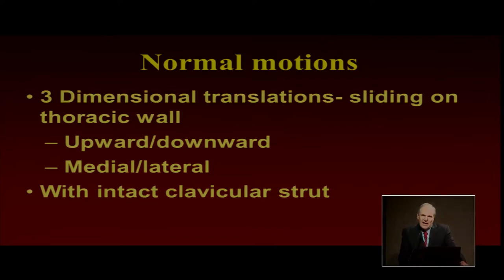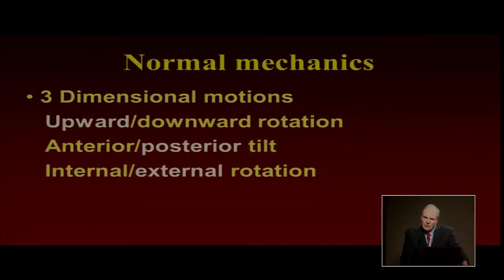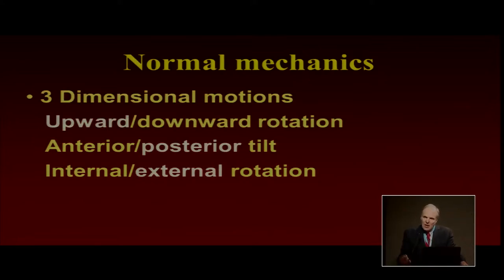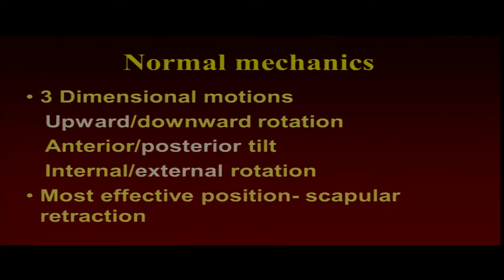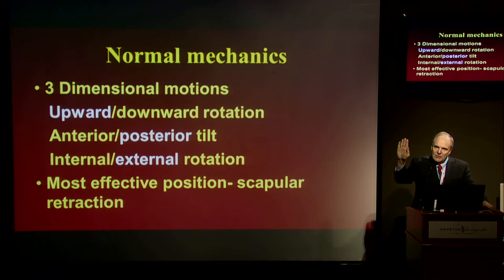When the clavicle strut is intact, when you have AC separation as was mentioned yesterday, then you lose that strut and you get what's called the third translation, which is down and in and under. There are motions which are rotations around a point. You have upward and downward rotation — this is the one we usually talk about in raising the arm — the classical two-to-one humeral thoracic, humeral scapular rotation. But also you get anterior-posterior tilt and internal-external rotation around axes as well. The most effective position for scapular and therefore arm function is to have the scapula in a position of relative retraction, which is external rotation, posterior tilt, and medial rotation, medial translation.